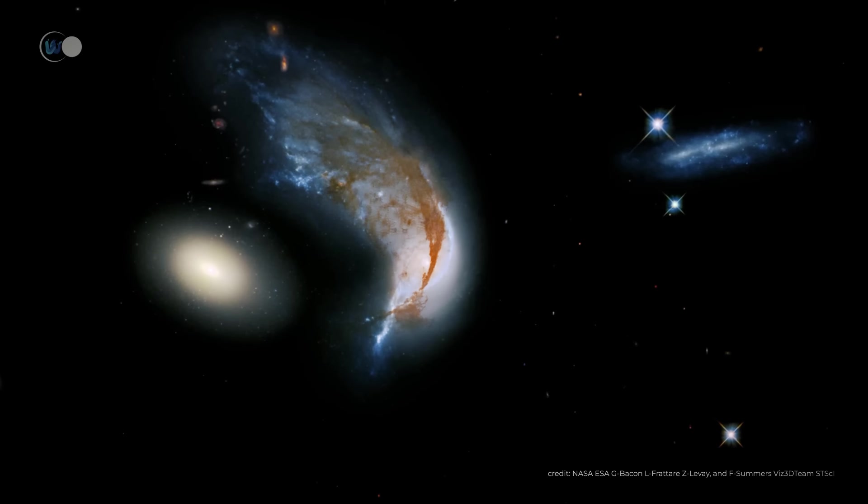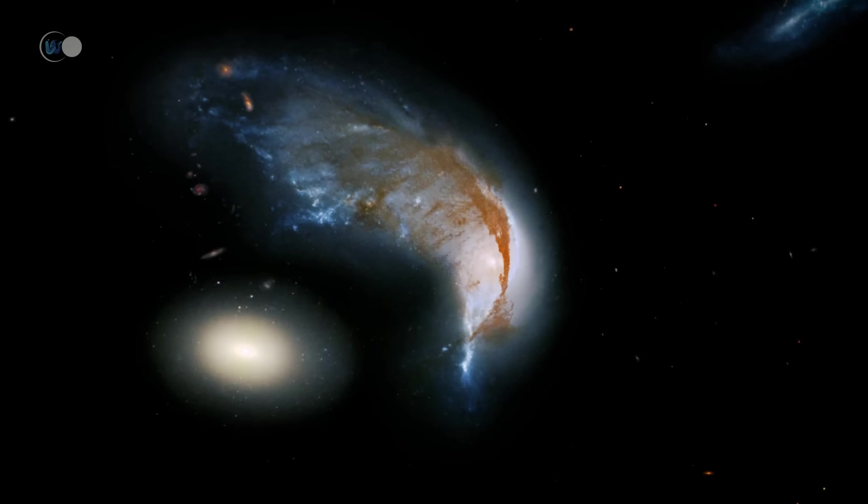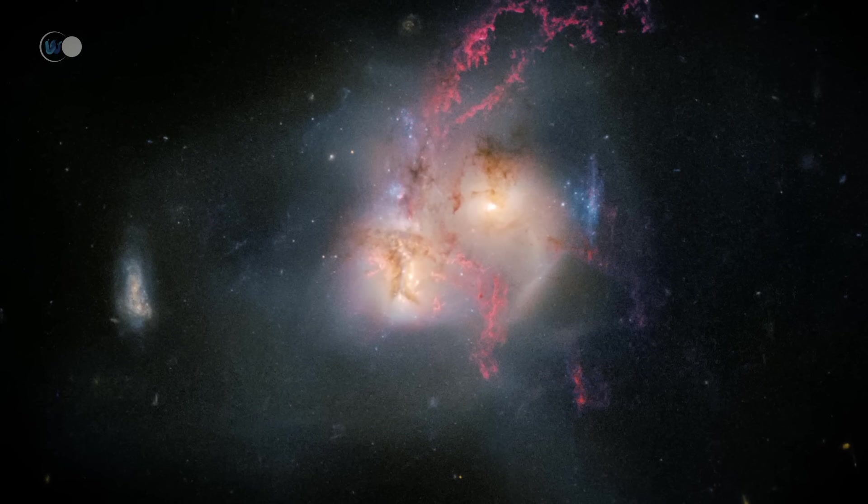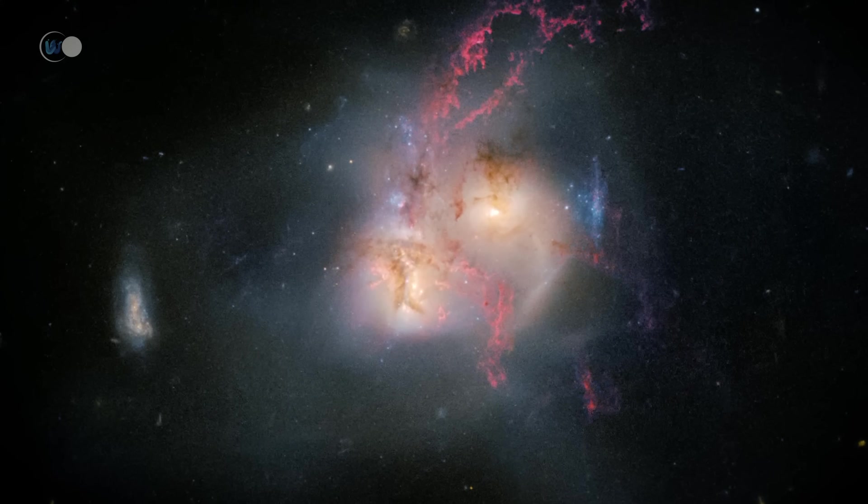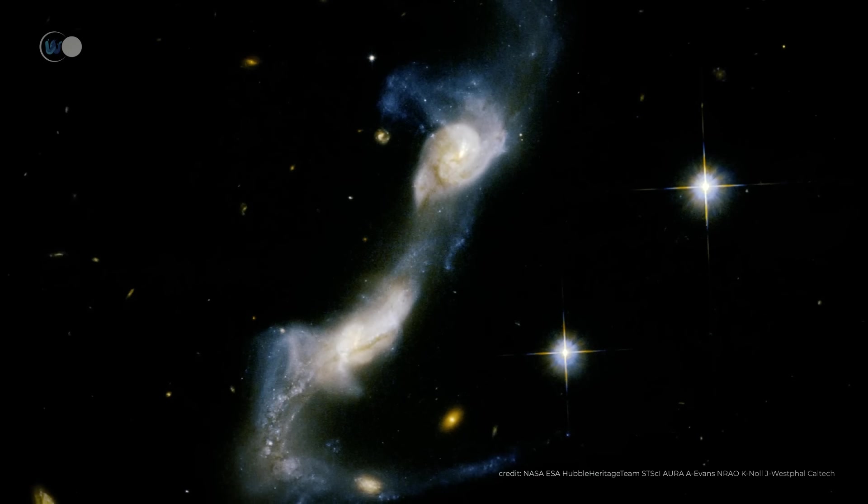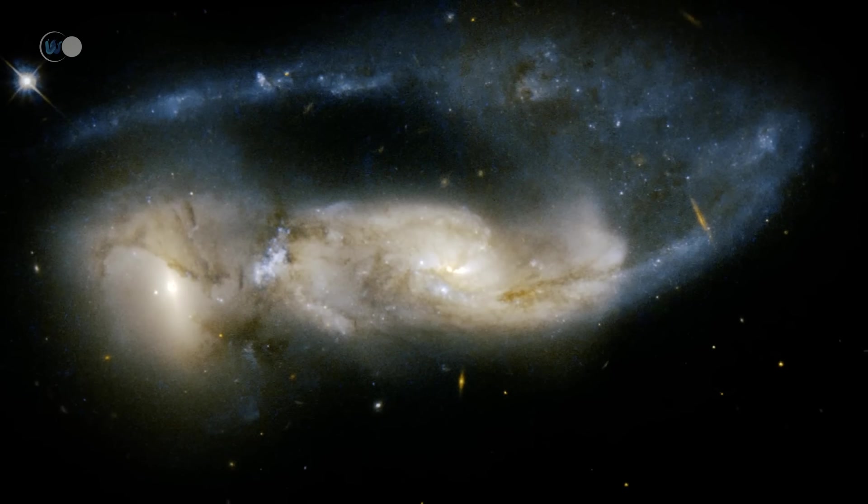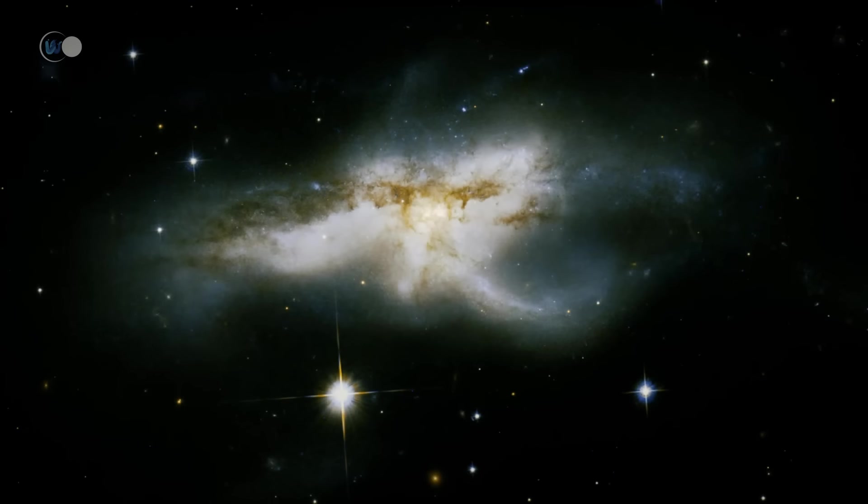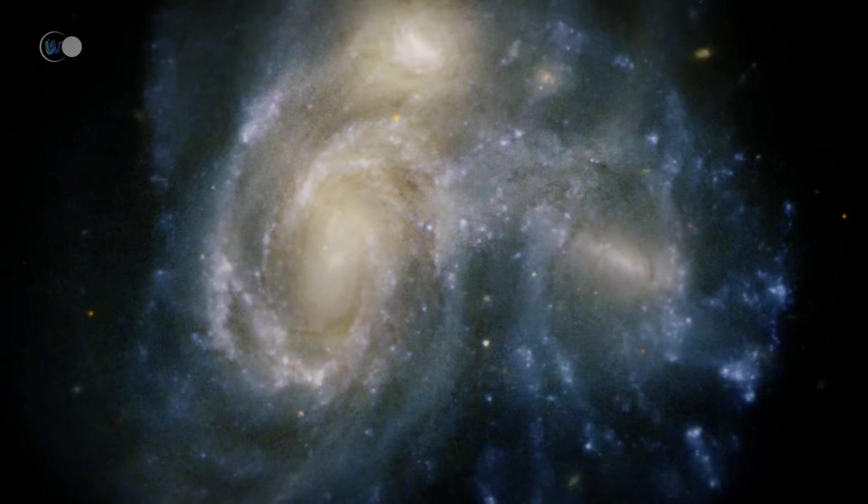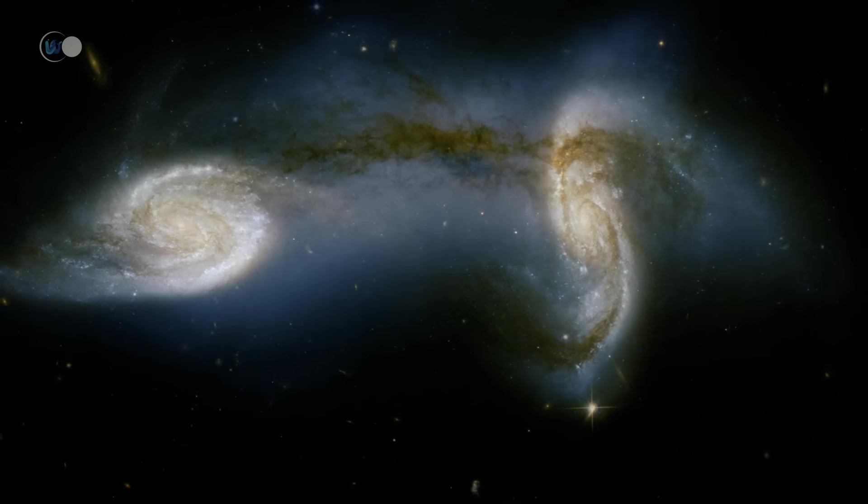Galactic cannibalism sometimes occurs when a massive galaxy collides with a smaller one. As a result, the former literally swallows the latter until it is completely absorbed. Intergalactic interactions occur when one galaxy is disrupted by the gravitational field of another. This can take the form of a minor interaction, as when a satellite galaxy disturbs the arms of a spiral galaxy, or a major interaction such as a collision or merger of two galaxies.